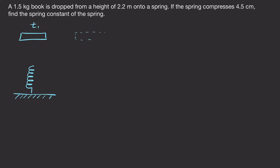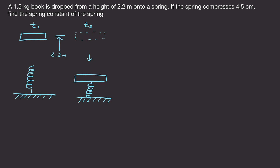This is where the book started, and at some later time the book's going to fall onto the spring and it's going to be compressed. The height that it was dropped is 2.2 meters. Since this is the height at the bottom, I'm going to call this my y equals zero — that way we don't have to worry about the height of the book relative to the ground, just the height that it falls.